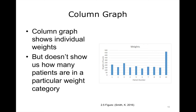Let's take a look at the weights for these 10 patients. We could graph them, but this isn't particularly helpful — individual weights plotted against patient number doesn't give us insight into categories of weights, such as one category for 200 to 249 pounds, another for 250 to 299 pounds, and so on. That's a job for a frequency histogram, which looks like a column graph but shows distributions.